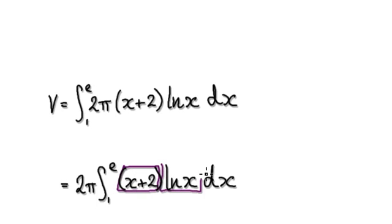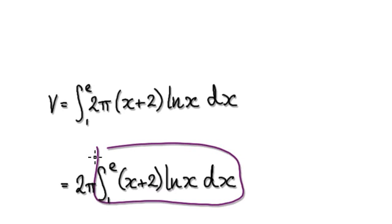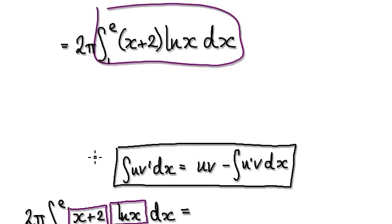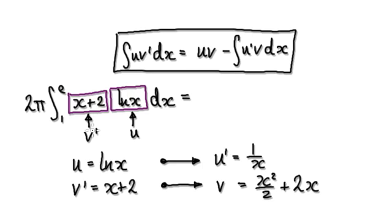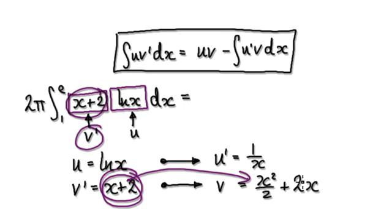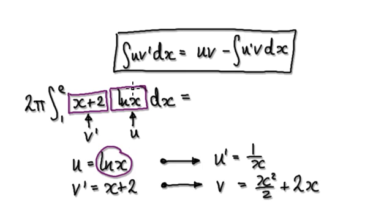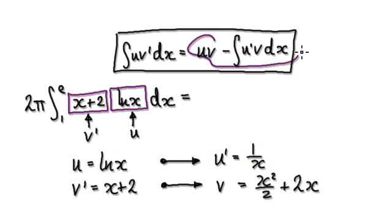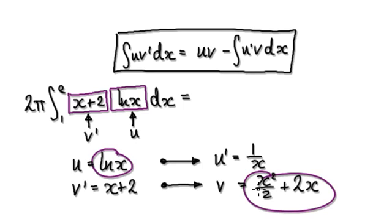Think of this as one block — you don't really want to integrate the natural log of x, so differentiate it. Set natural log of x to u, and then set (x + 2) to be v prime. Use integration by parts on this. So v prime equals (x + 2); if you integrate that, it gives you v. And if u equals natural log of x, differentiating gives you u prime.